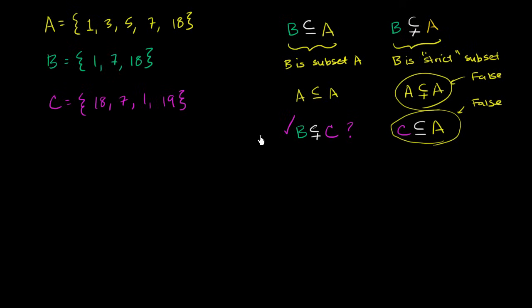Now, we could also reverse the way we write this, and then we're really just talking about supersets. So we could reverse this notation, and we could say that A is a superset of B, which is just another way of saying that B is a subset of A. But the way you could think about this is A contains every element that is in B, and it might contain more, it might contain exactly every element.